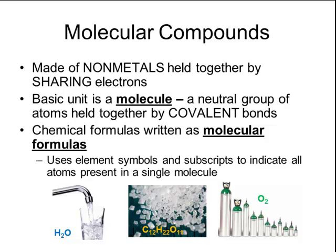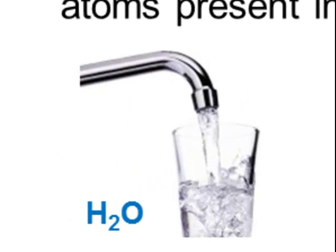When we write chemical formulas for molecular compounds, they are written as molecular formulas. A molecular formula uses element symbols and subscripts to indicate all of the atoms that are present in a single molecule. For example, a water molecule has two hydrogens and one oxygen, and so we write it as the formula H2O.